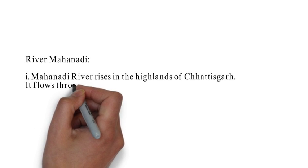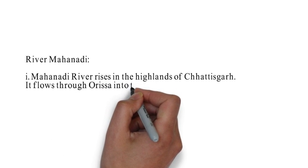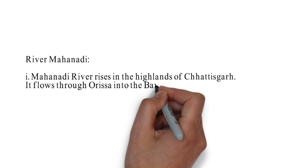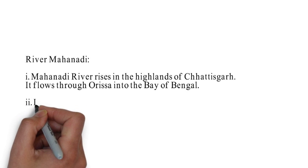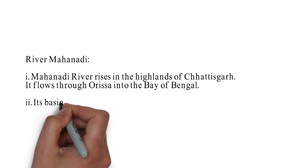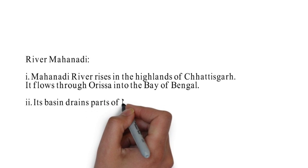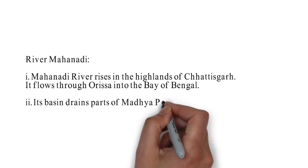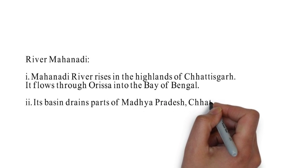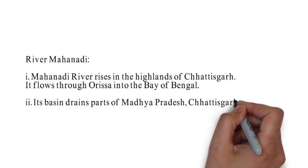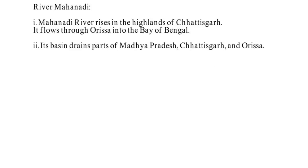When questions related to rivers come up, two things are important: first, where it originates, and second, which states does it drain. By applying simple common sense you can remember the facts related to this river. If you know the origin is in Chhattisgarh, you can figure that it must drain Madhya Pradesh, and since it flows into the Bay of Bengal, it must cross the state along that coast.